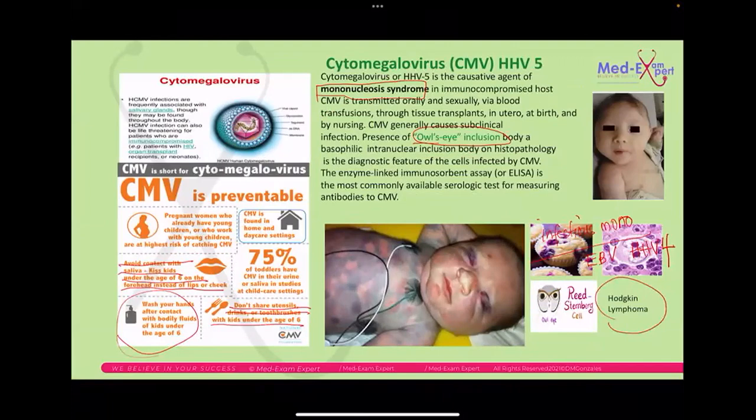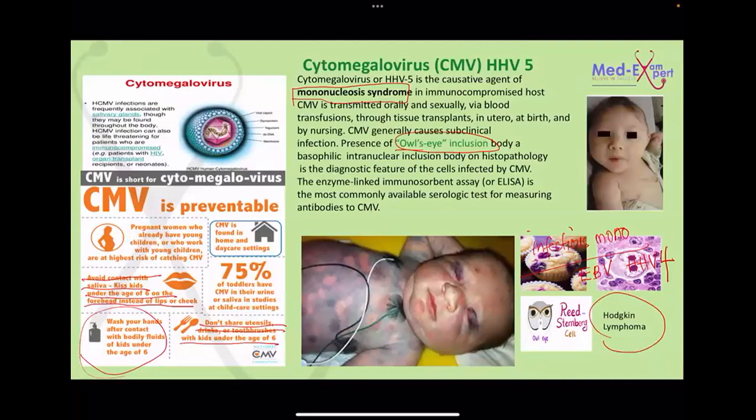The CMV owl-eye inclusion body is seen on histopathology. Congenital CMV presents with a blueberry muffin rash, which is part of the CMV mnemonic. However, all TORCH infections can cause a blueberry muffin rash, so this is not exclusively diagnostic of CMV.